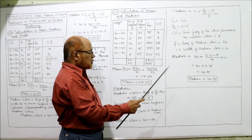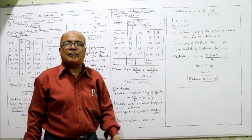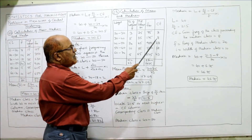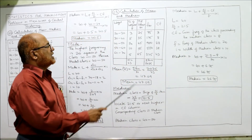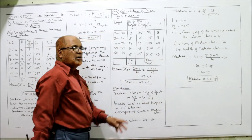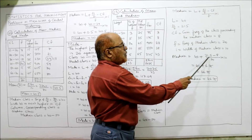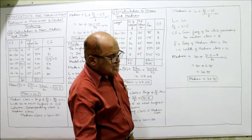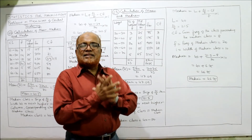Lower limit l = 40, n/2 = 21.5. The cf is the cumulative frequency of the class preceding the median class; the class before 40–50 is 30–40, with cf = 8. The frequency of the median class f = 20, and width i = 10. So: 40 + (21.5 − 8) ÷ 20 × 10 = 40 + 6.75 = 46.75 is the median.